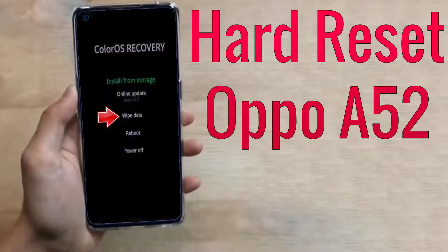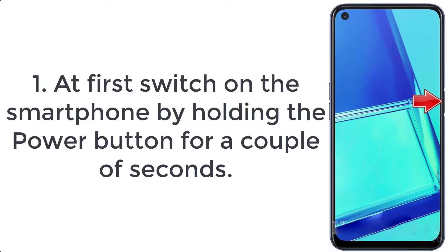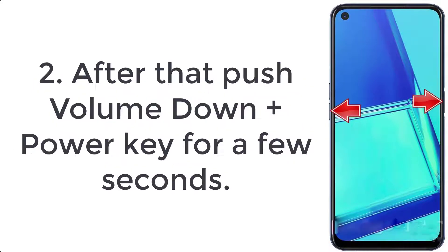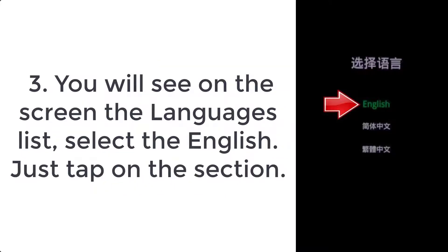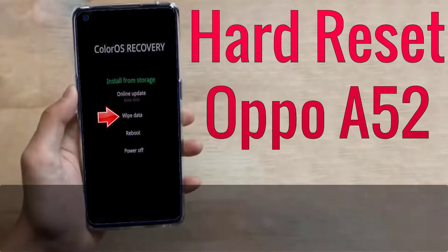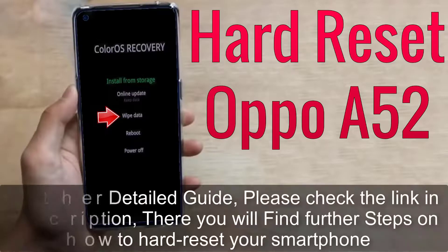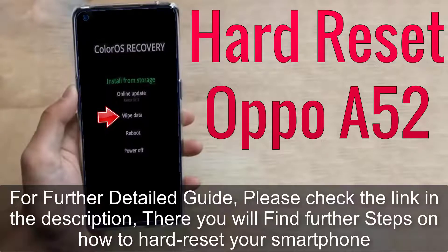How to hard reset Oppo A52. Step 1: Switch on the smartphone by holding the power button for a couple of seconds. Step 2: Push volume down plus power key for a few seconds. Step 3: You will see on the screen the languages list — select English.